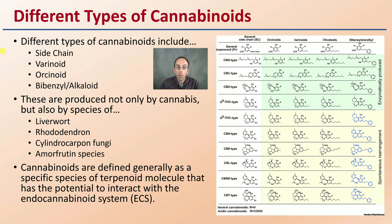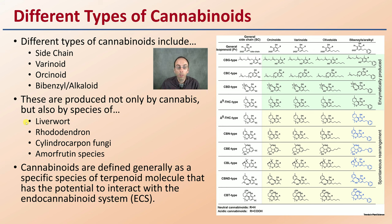These are produced not only by cannabis — keep that in mind — cannabis does produce these, but there are other plants, fungi, and other species that produce them as well. Liverworts and rhododendron are just some examples.